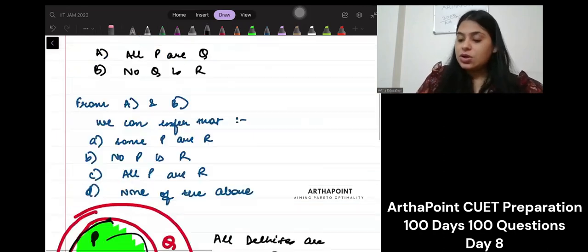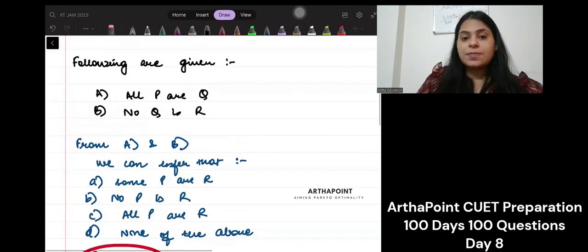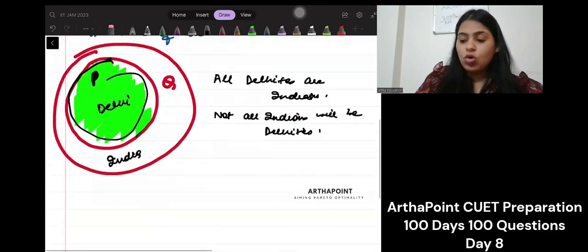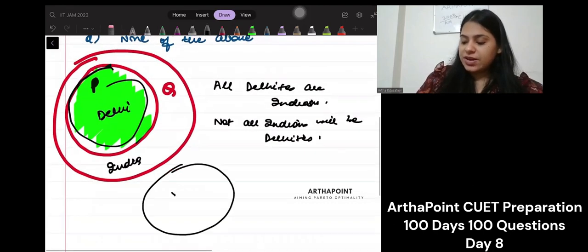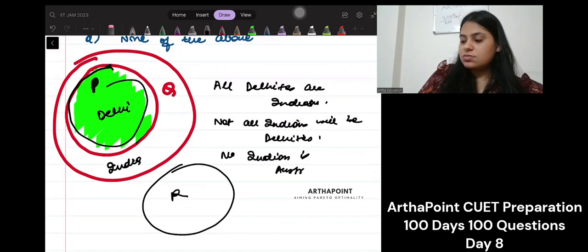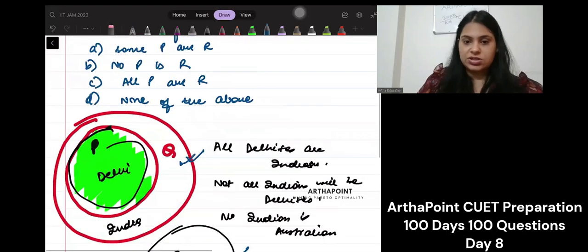This is the first statement. Then it says, no Q is R. So no Q is R. That means R is separate. Just say, for example, if I have this, then I can say, no Indian is Australian. Maybe something like this. Indians are separate, no? Australians are separate. So no Q is R. This is what it says.